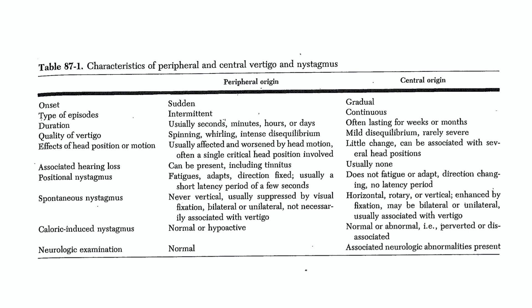Let's start at the top and work our way down. First: onset. Gradual in central? Nope — posterior circulation strokes most often come on suddenly, and vestibular neuritis, the diagnosis that always worries us if it could be a stroke, can come on suddenly or have a stuttering start. So this part is dangerously wrong. Type of episodes: the intense vertigo in BPPV is intermittent, lasting roughly 20-30 seconds, but patients with vestibular neuritis — also on the peripheral side — have constant vertigo for days. And on the central side, posterior circulation TIA, although fairly rare, is not continuous. Dangerously wrong again. Duration: how is saying peripheral vertigo can last seconds, minutes, hours, or days helpful in any way? Not helpful.